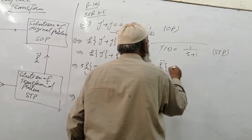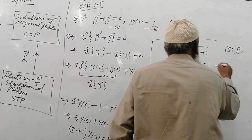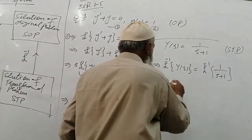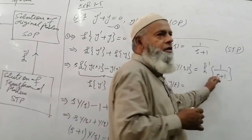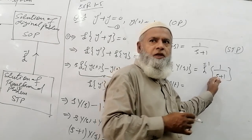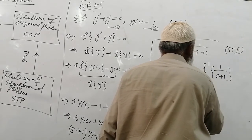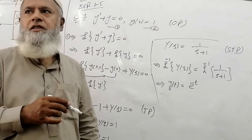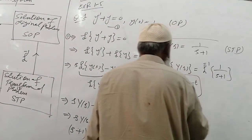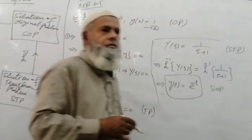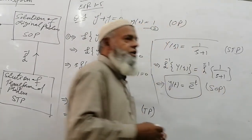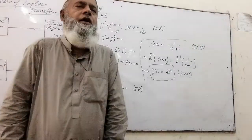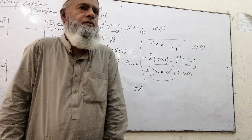We have to take its Laplace inverse transform. When we take the Laplace inverse transform of Y(s) = 1/(s+1), everybody knows that the Laplace inverse transform of 1/(s+1) is e raised to the power of minus t, because a here is minus 1. So this is the solution of the original problem. This is how Laplace transform works: first take the Laplace transformation of the original problem, then solve it, and then take the Laplace inverse transformation.